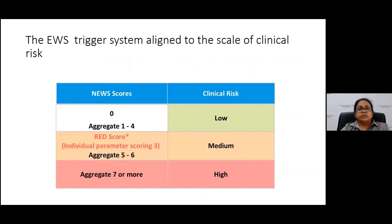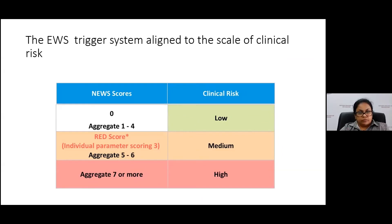These scores are aligned to a scale of clinical risk of deterioration. If the score is zero or low (one to four), the patient is at lower risk of deterioration. A score between five and six indicates medium risk. A score of seven or more indicates the patient is at higher risk.